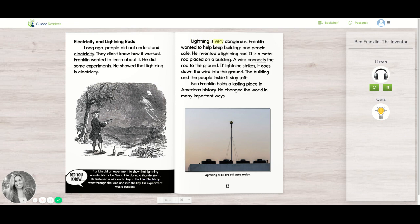Lightning is very dangerous. Franklin wanted to help keep buildings and people safe. He invented a lightning rod. It is a metal rod placed on a building. A wire connects the rod to the ground. If lightning strikes, it goes down the wire into the ground. The building and the people inside it stay safe.